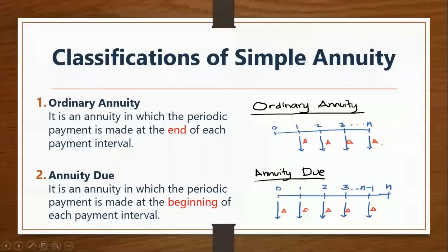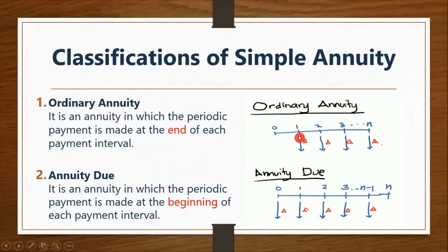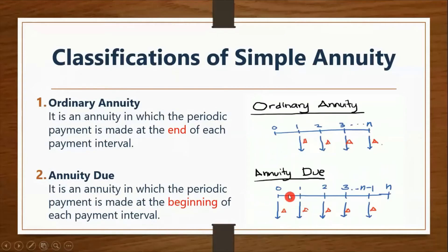There are two classifications of simple annuities. First, ordinary annuity, in which the periodic payment is made at the end of each payment interval — the payment starts at the end. On the other hand, annuity due is an annuity in which the periodic payment is made at the beginning of each payment interval — it begins at the start of the payment interval.